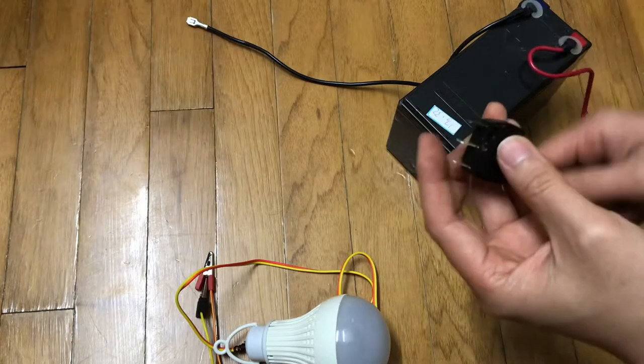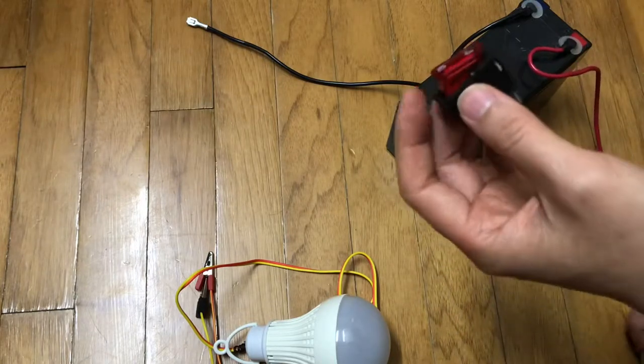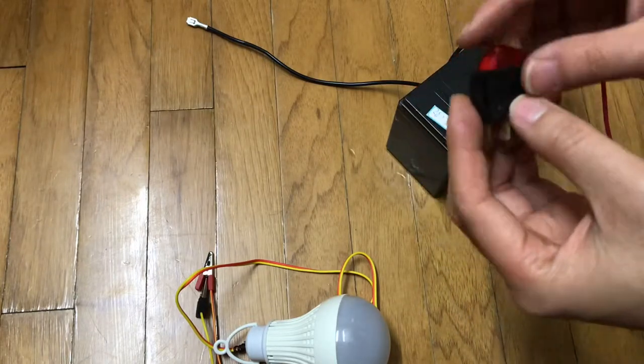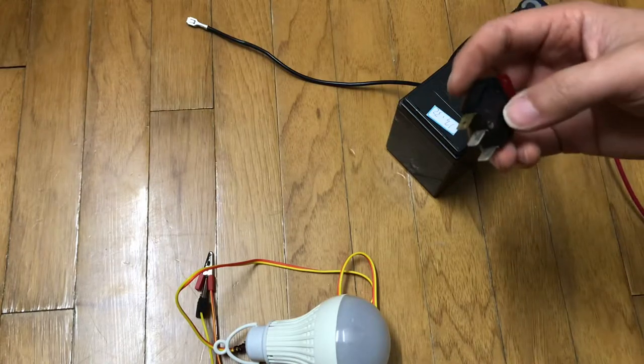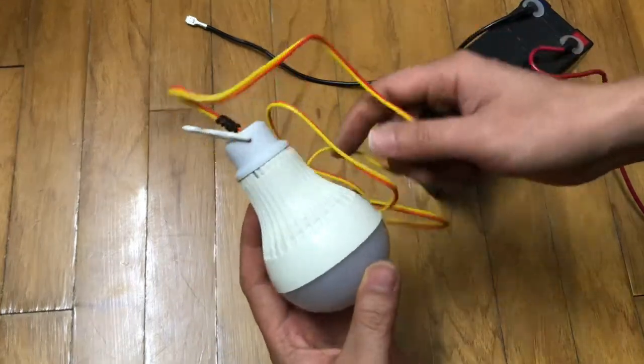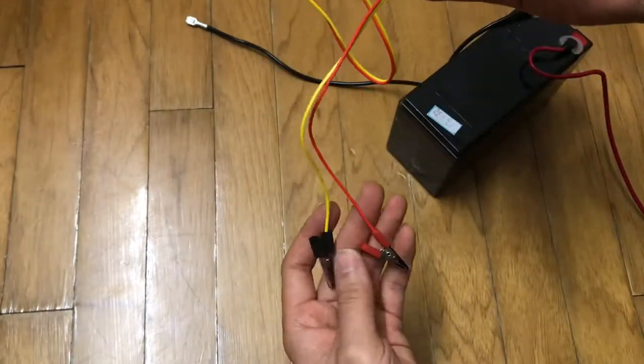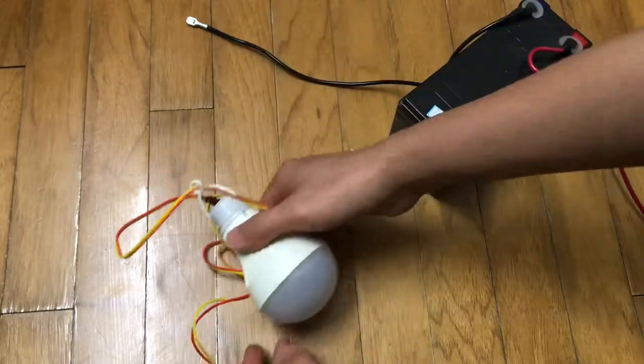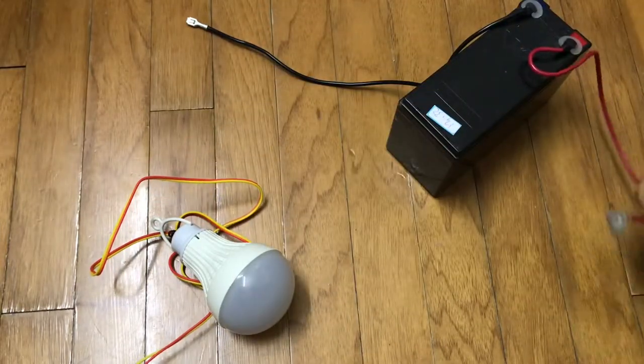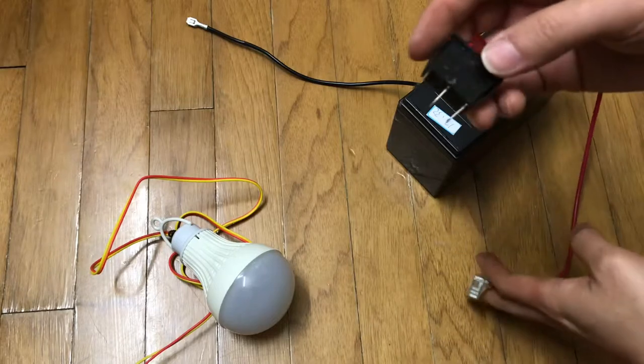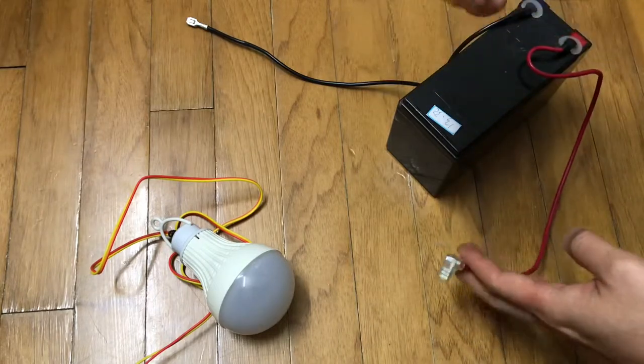So this is the three-prong switch, and this is the 12-volt light. You can buy it from eBay for like a couple bucks, 3 or 4 bucks. Okay, so let's get started. Let's take a look at this. We have three prongs right here.